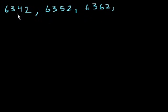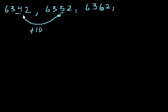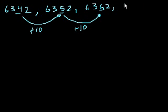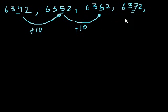So we're incrementing the 10s place by 1. When you add 10, you just increment the 10s digit by 1. We're adding 10. So the next one is going to be 6,372 — add 1 to this digit, or adding 10 to the entire number, gives us 6,372. And then we add 10 again, we get 6,382.